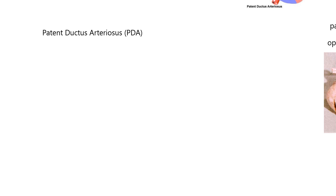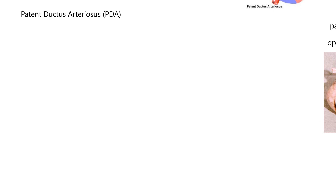Now we're going to talk about a patent ductus arteriosus. It's pretty common in newborn puppies and also happens in humans. It's very interesting because something that's normal in the fetus, if it persists, becomes abnormal in the neonate. The fetus is the developing puppy or human in the uterus, and the neonate — N-E-O-N-A-T-E — is the newborn. 'Patent' means open or affording free passage.